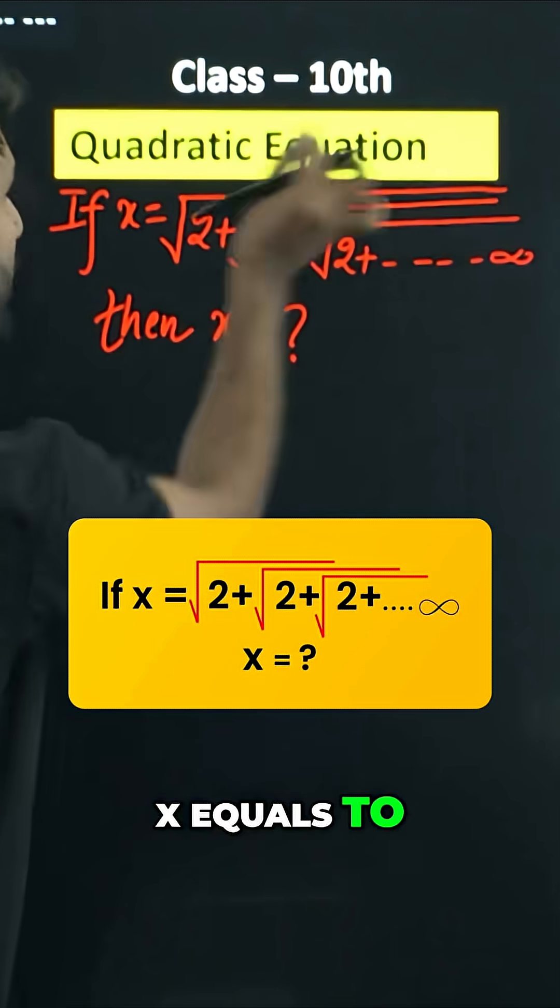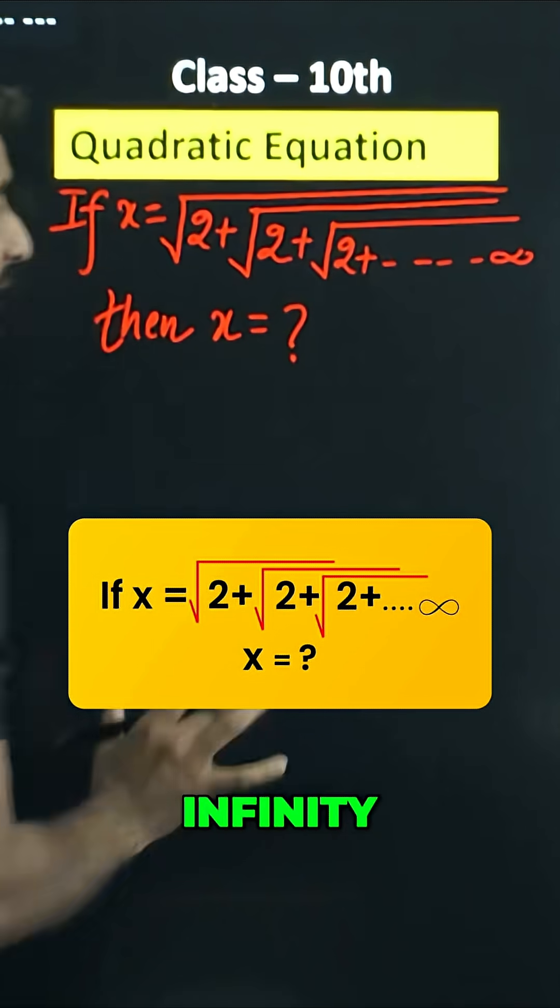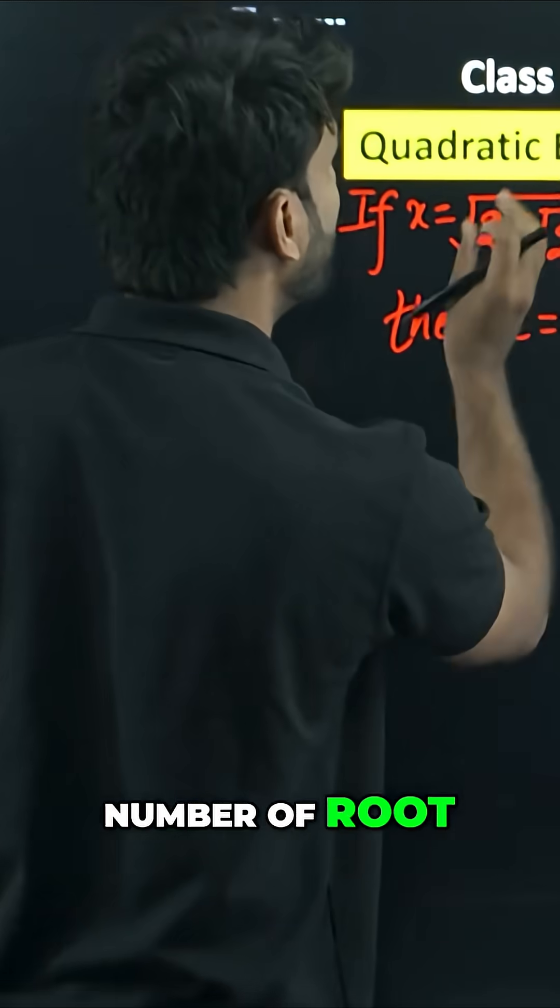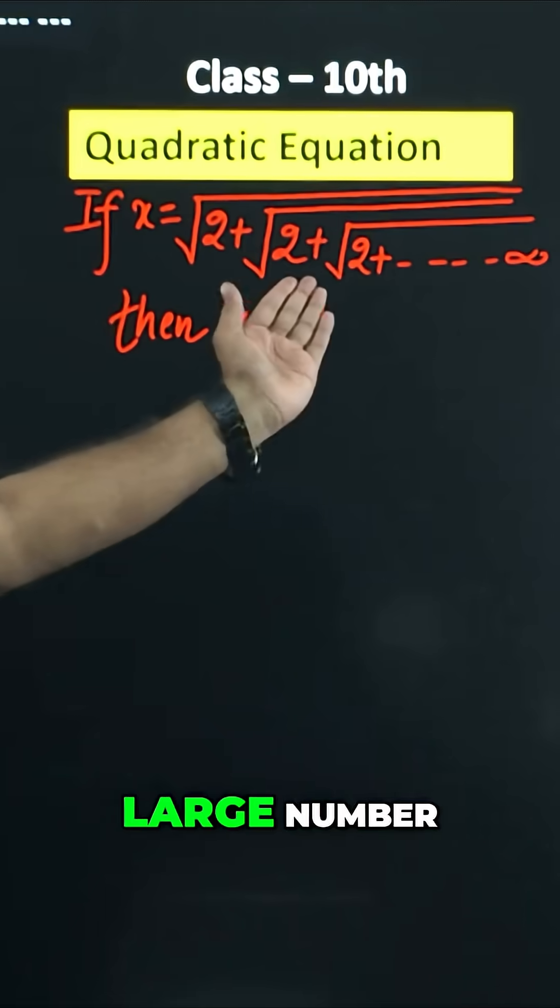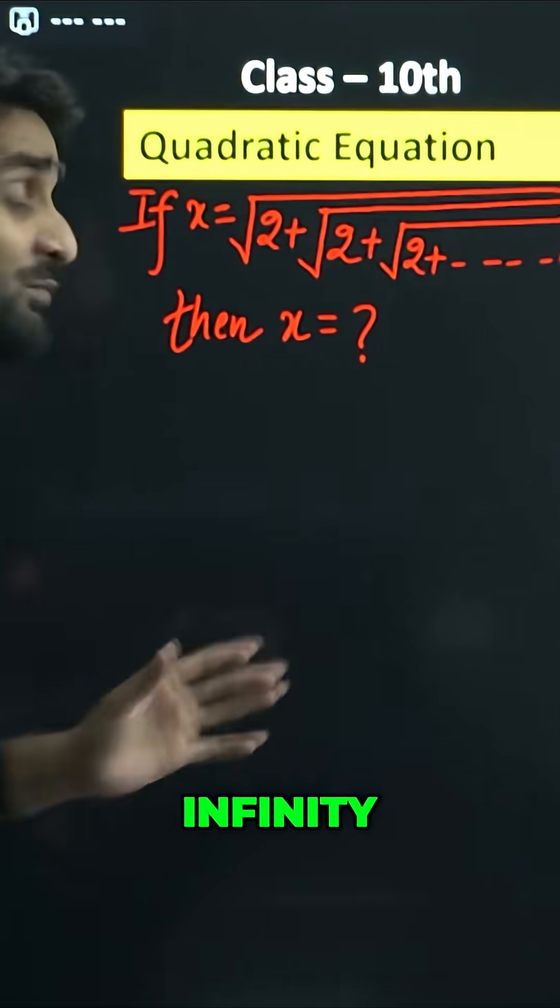The question is: x equals to square root of 2 plus square root of 2 plus square root of 2 plus and so on till infinity. Infinity indicates that the number of root 2s is a large number, even we cannot count them. There are large numbers of root 2 because the root 2 is going towards infinity.